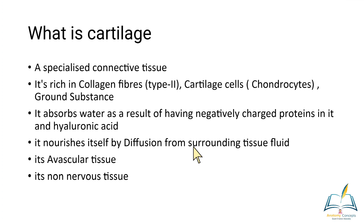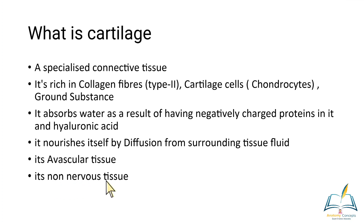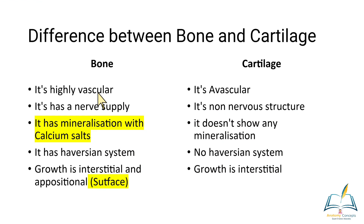Cartilage nourishes itself by diffusion through the surrounding tissue fluid — the tissue fluid diffusing from surrounding blood capillaries which are nourishing nearby bones. This is how cartilage gets nourishment through diffusion, and that is why it is an avascular structure and a non-nervous tissue as well. The notable difference between bone and cartilage is that bone is highly vascular whereas cartilage is avascular.